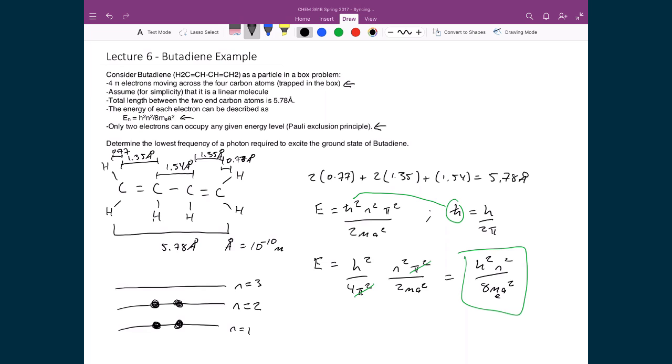And of course, we're saying that the problem is, what's asking is, determine the lowest frequency of a photon required to excite the ground state of butadiene, and right here in my energy level diagram, which is what I have drawn down here, I have my ground state of butadiene. All my electrons are in the lowest possible energy configuration that they can possibly be.